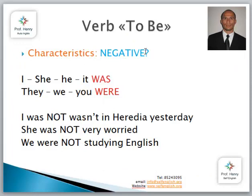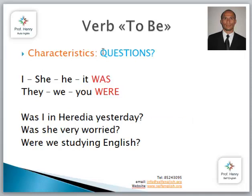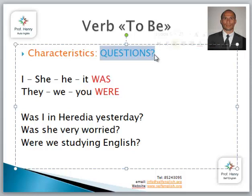What happens in the negative form of the verb to be in past? Very simple. I was not, or wasn't — wasn't is more common than was not. I wasn't in Heredia yesterday — yo no estuve, yo no estaba en Heredia ayer. She was not very worried. We were not studying English — nosotros no estábamos estudiando inglés. And for questions: ¿Cómo se hace una pregunta en pasado? Exactly the same as in the present. Was I in Heredia yesterday? Was she very worried? Were we studying English? The pronoun goes after the verb, and the verb comes before the pronoun.